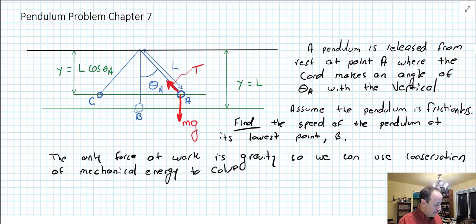Okay, welcome back folks. Here's a pendulum problem. In blue we have the position of the pendulum at three points: A, B, and C. So the pendulum is released from A, and at that point the chord makes an angle of theta A with the vertical.